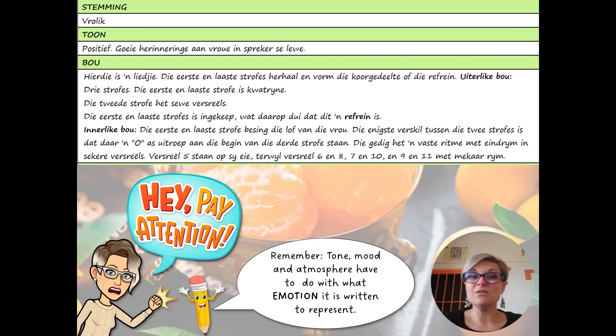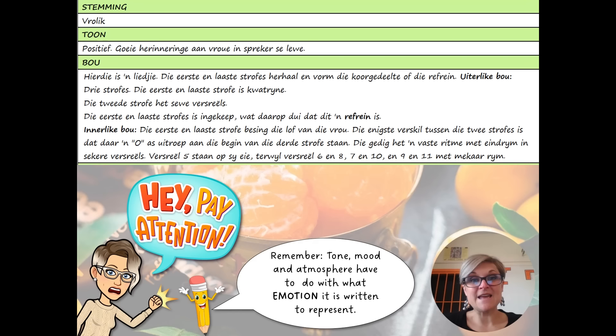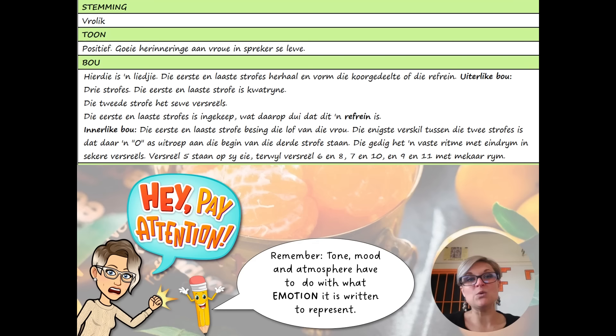The tone of this poem is very positive. It's good memories that he has of these people. The build of your poem is almost again like a song. You've got the first and the last stanza, which is basically a chorus because it repeats. There's one word that changes the second time you see the chorus. The outer build of your poem has three stanzas, two of which have been repeated. So technically you've got one big stanza in the middle. Your second stanza is the one that's got seven lines, and that's where your story lies.